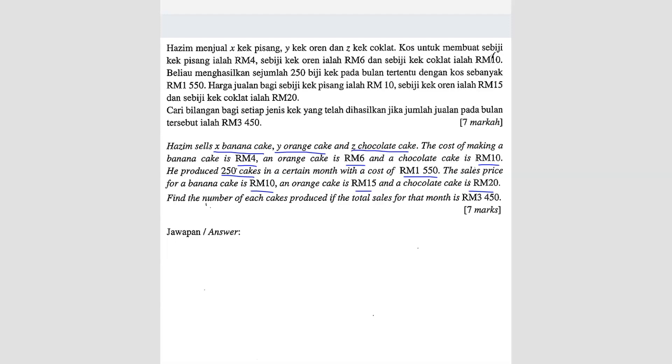Let's do this one by one. We know that x represents banana cake, y represents orange cake, and z represents chocolate cake. The first one says the cost of making banana cake is 4 ringgit, 6 ringgit for orange, and 10 ringgit for chocolate.